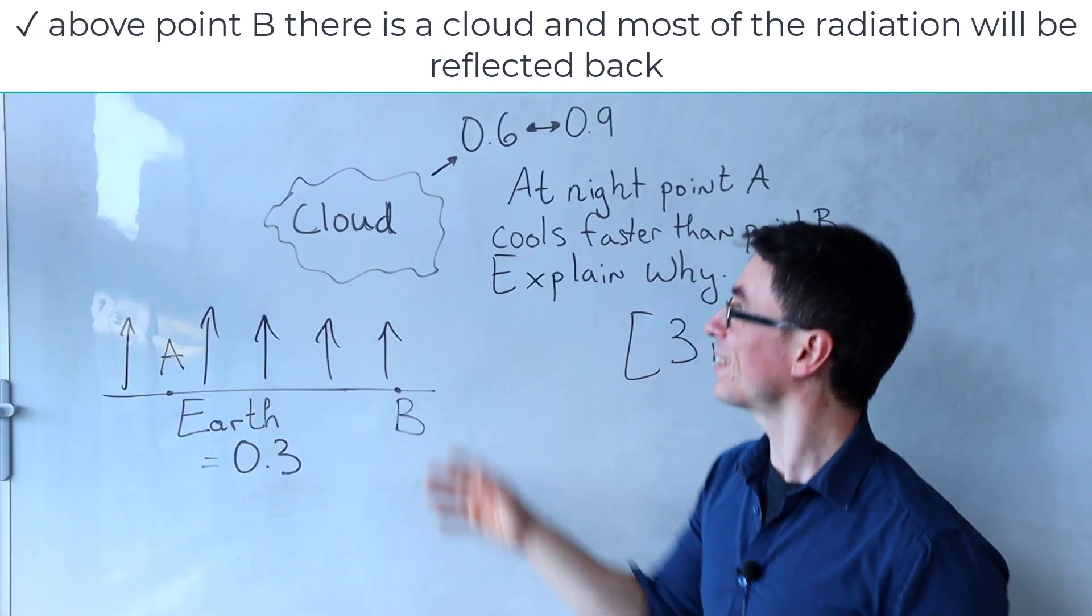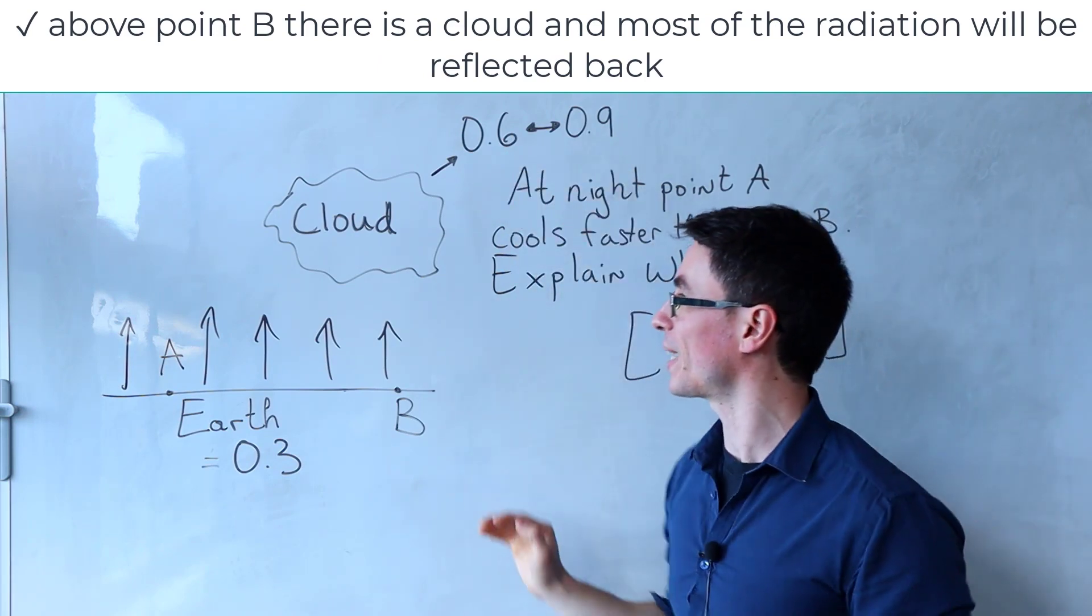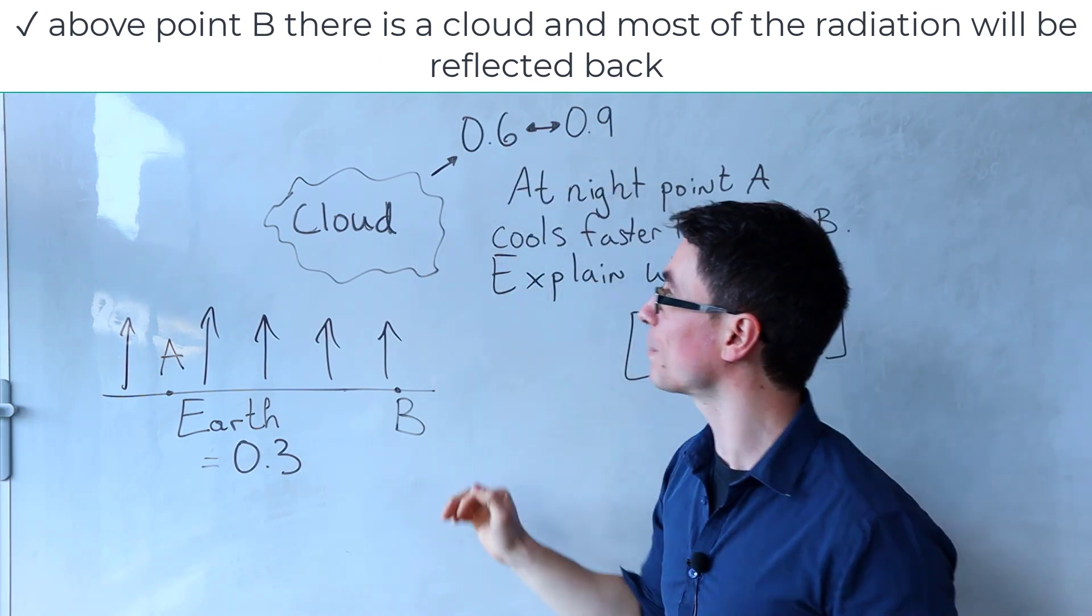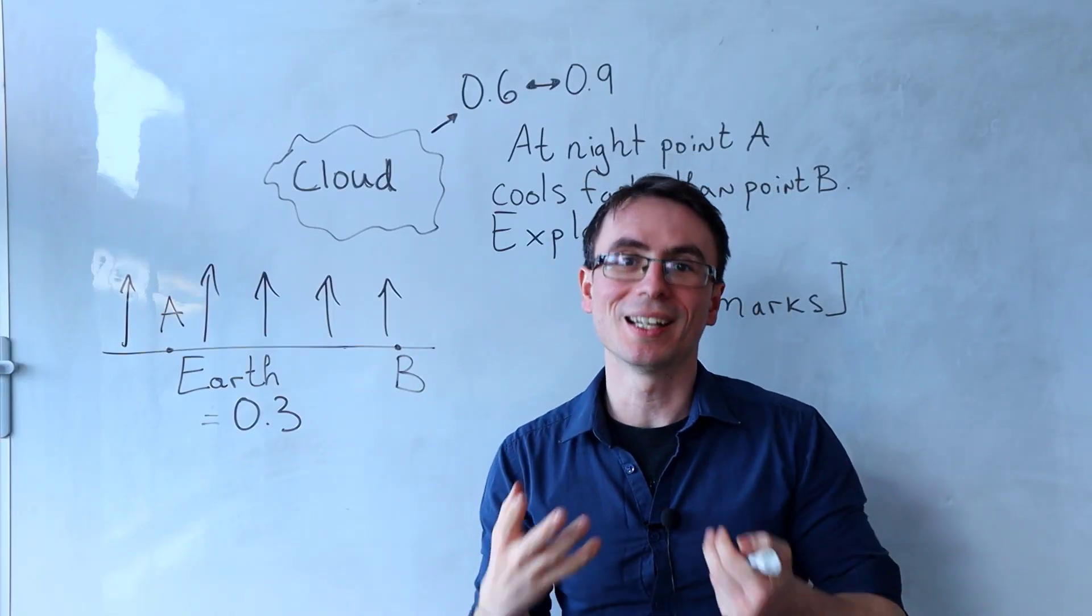However, at point B, there is a cloud, and between 60% and 90% of the radiation will be reflected by the cloud, and hence this point will cool down slower.